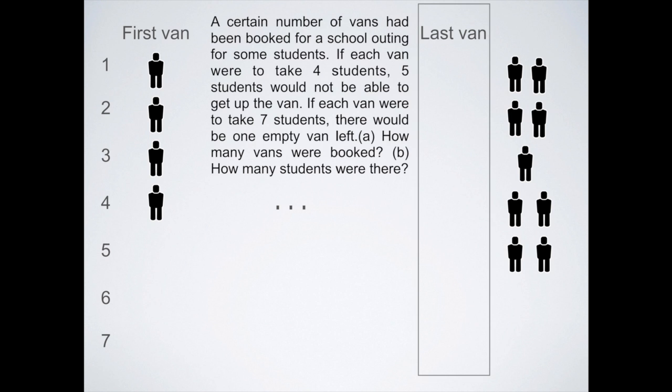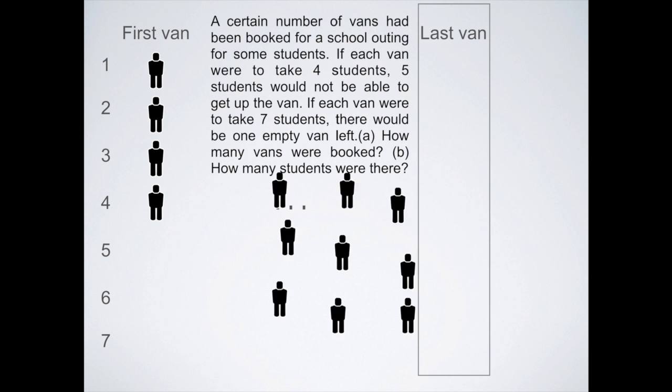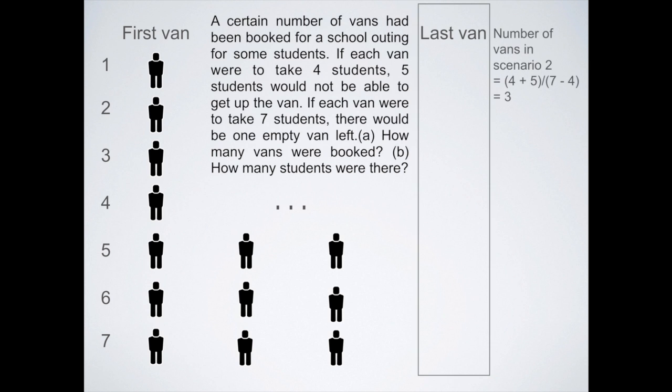So these nine students here, four plus five, I'm going to put them in the remaining van. Can you see this? That's your answer. In this case, you can see that the number of vans in scenario two is actually four plus five divided by three, and that gives you nine divided by three, which is three.